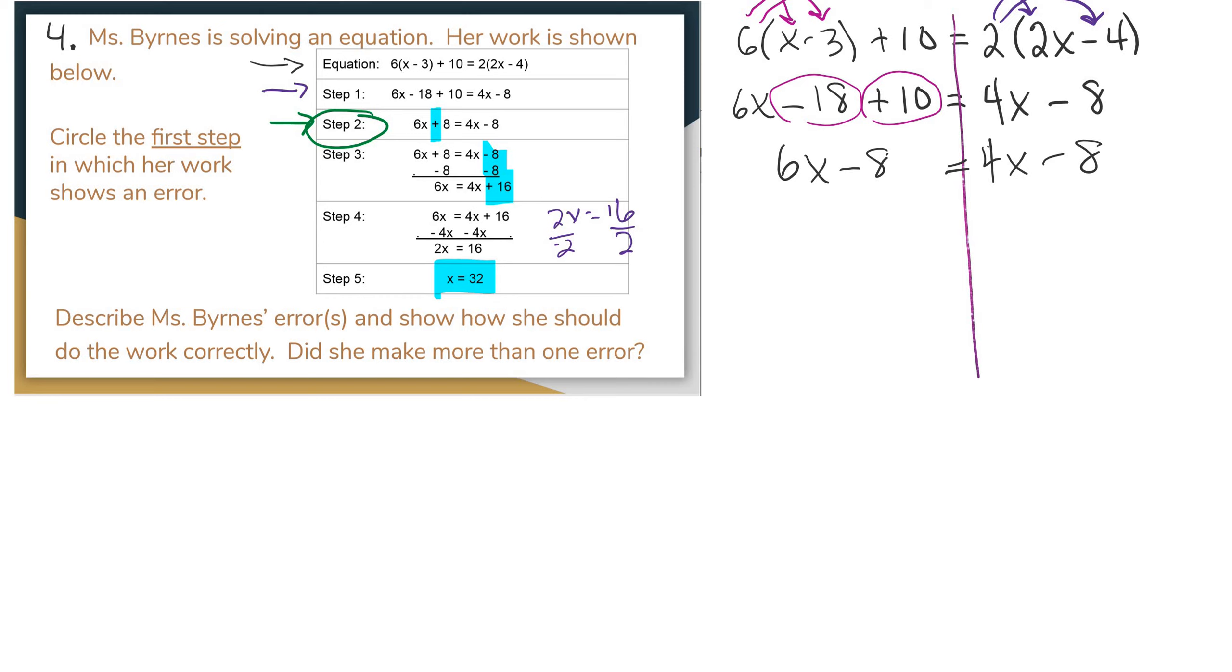So we're going to come over here on the side, and we're going to finish solving this. So I'm going to take 4x off each side. And I get 2x minus 8 equals negative 8. So I'm going to add 8, and then divide by 2. I get x equals 0.